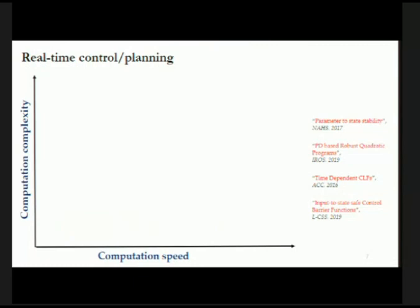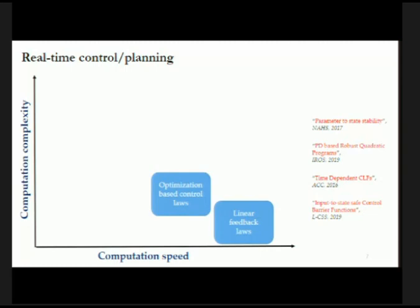If you look at the world of real-time control and planning and make a comparison between computational speed and complexity: linear feedback laws are very fast and not at all complex — for example tracking or going to a desired set point. Then come optimization-based control laws, where you have an optimization problem at every time step. And then the most recent ones are deep neural network-based controllers, also used in real-time. What we have noticed is that these are getting less and less robust.